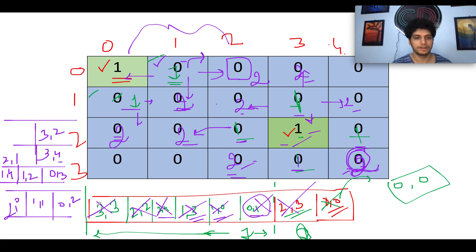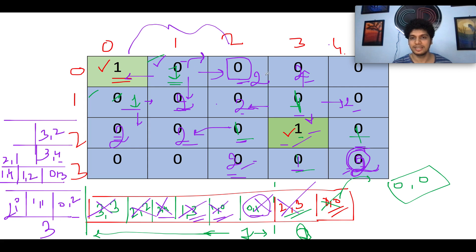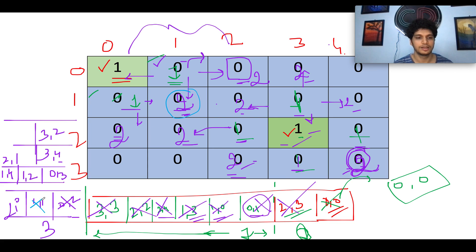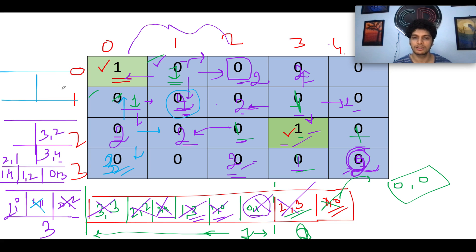Now at level 3, we process (0,2) and (1,1) — neither has any unvisited water neighbor, so we skip both. For (2,0), one neighbor is not yet visited and is a water cell, so we update it to distance 3 and insert it into the queue. Continuing the remaining iterations, the maximum distance value set across the entire grid turns out to be 3, and this becomes our answer.